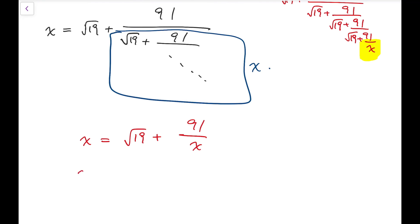If I multiply x on both sides, that's x squared equals square root of 19 times x added by 91. And this is in fact just a very simple quadratic equation.